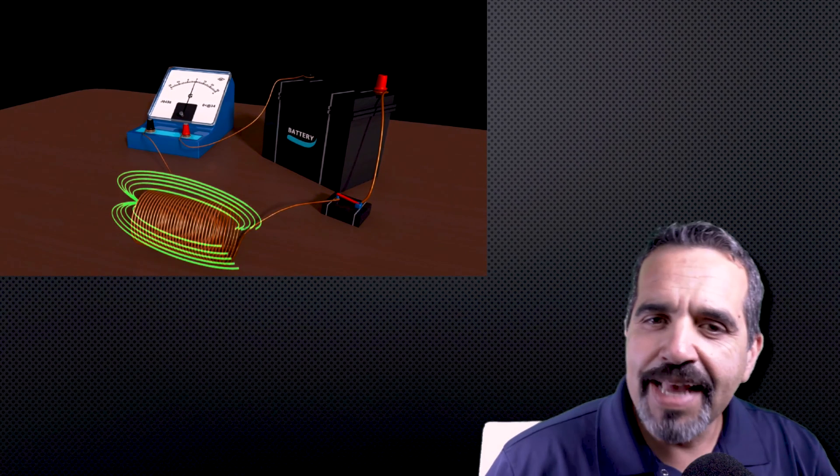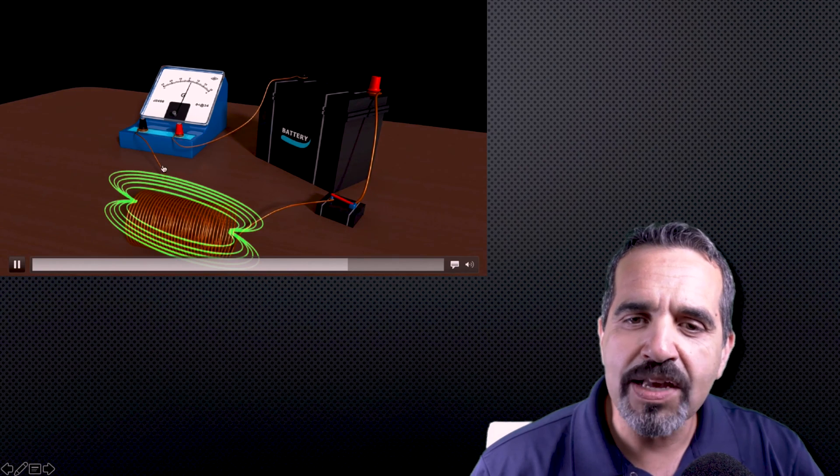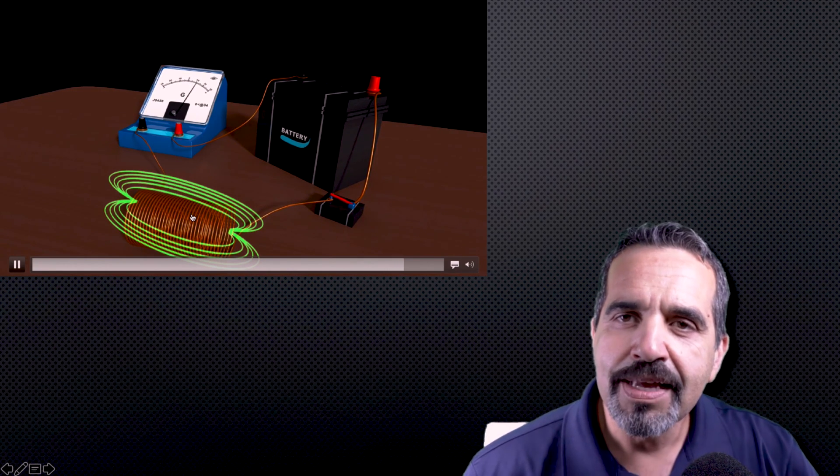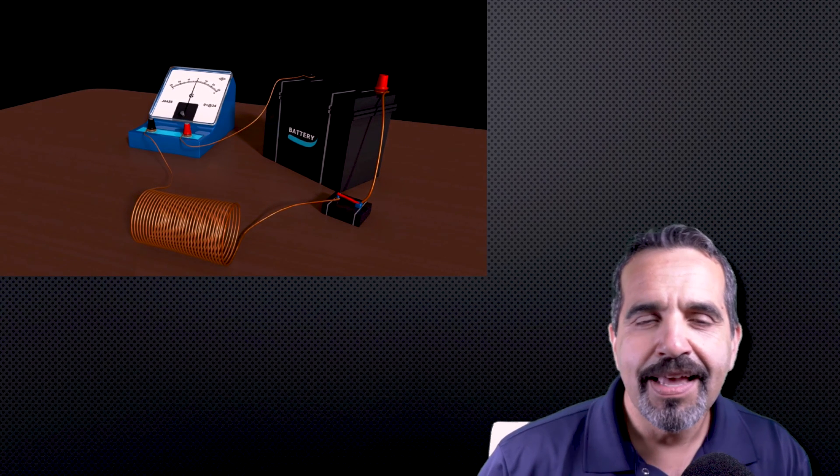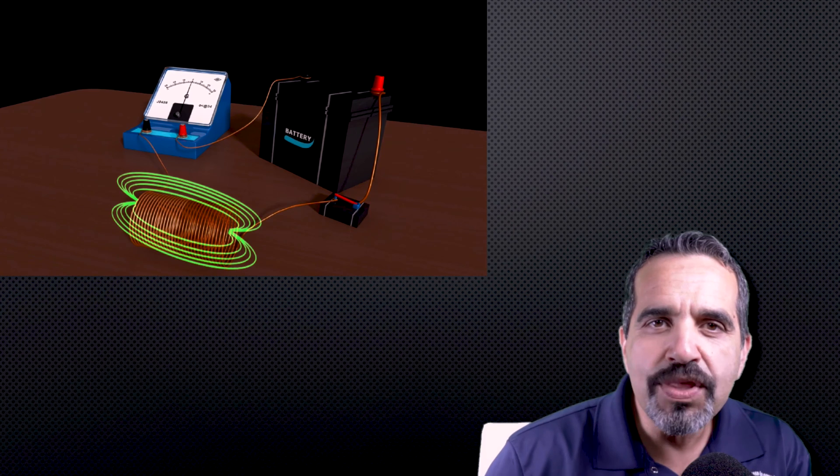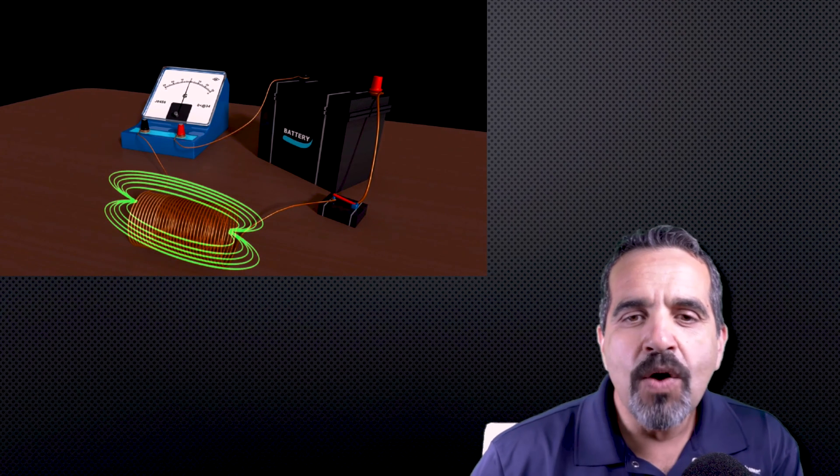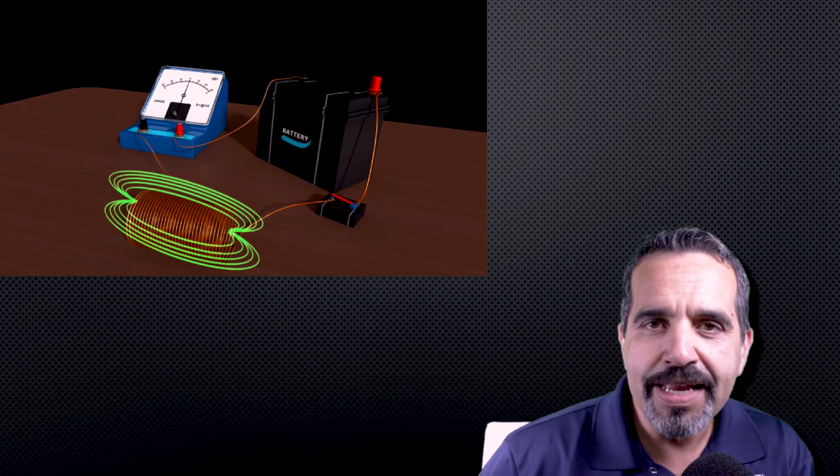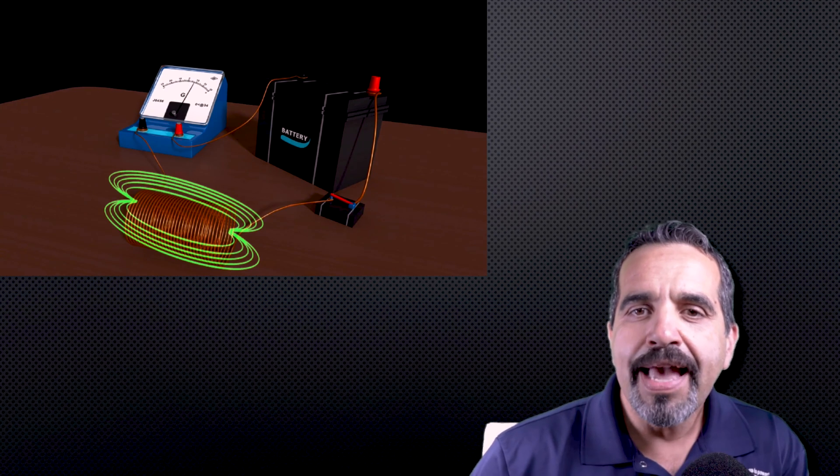So why does it take so much time? Well, it takes time because this electromagnetic field, this magnetic field that's being created around the inductor is creating something called a counter-EMF. It is countering the flow of current through the inductor. Now, once the inductor becomes saturated, current will flow and will complete the circuit.